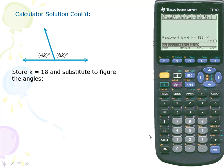Next we'll substitute or store k for 18 and substitute the value 18 in our angle measures. So we'll simply take the number 18.